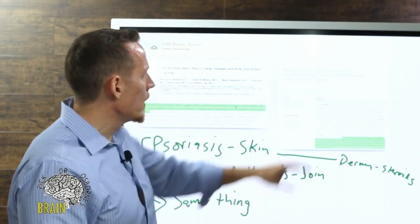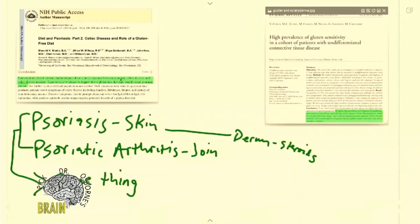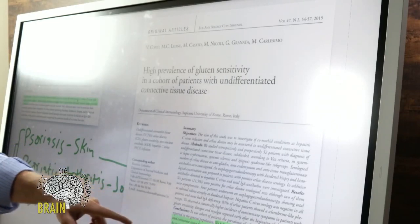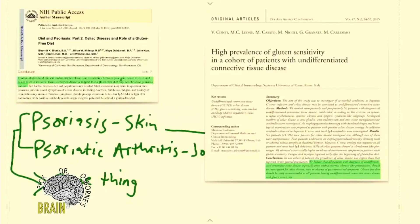Again, research confirmation on top of what we see in our clinic. It's not just me trying to tell you to go on a gluten-free diet for no reason. This next one: 'High Prevalence of Gluten Sensitivity in a Cohort of Patients with Undifferentiated Connective Tissue Disease' - connective tissue disease, scleroderma, or sclerotic connective tissue adhesions forming. 'We believe that all patients with the diagnosis of undifferentiated connective tissue disease, especially those with a systemic sclerosis-like presentation, should be investigated for celiac disease even in the absence of GI symptoms. The gluten-free diet should be early recommended to all patients having undifferentiated connective tissue disease and gluten sensitivity.'